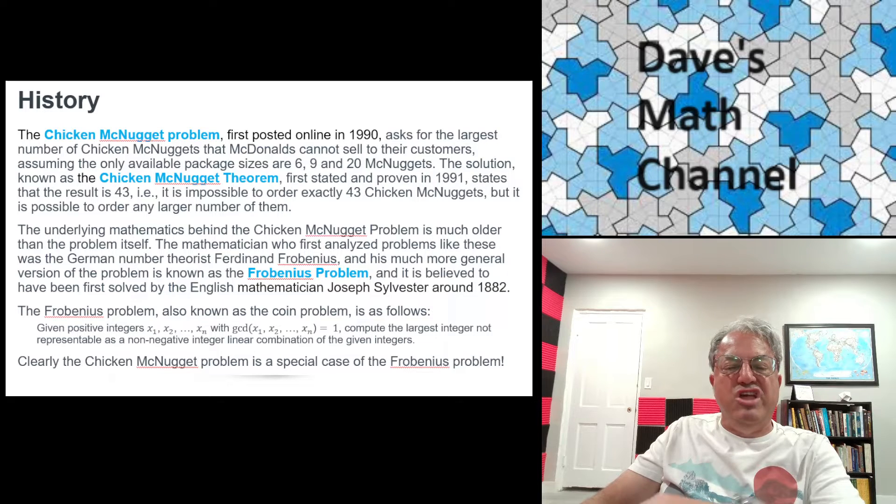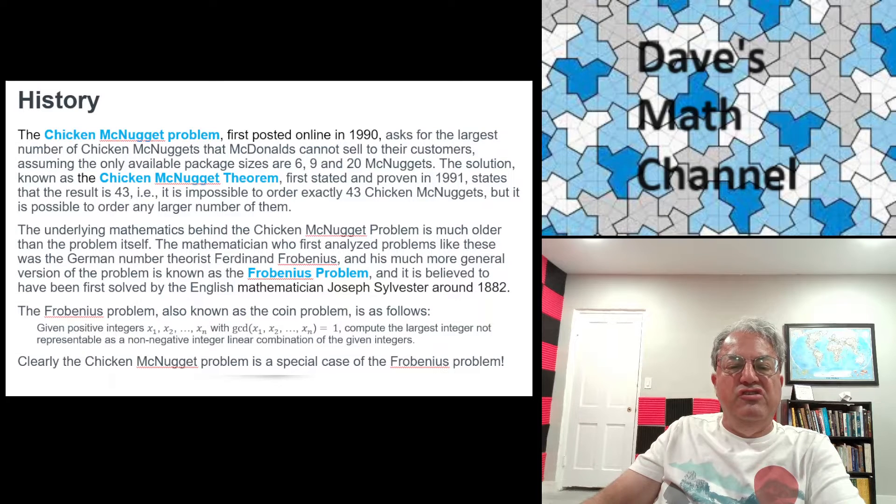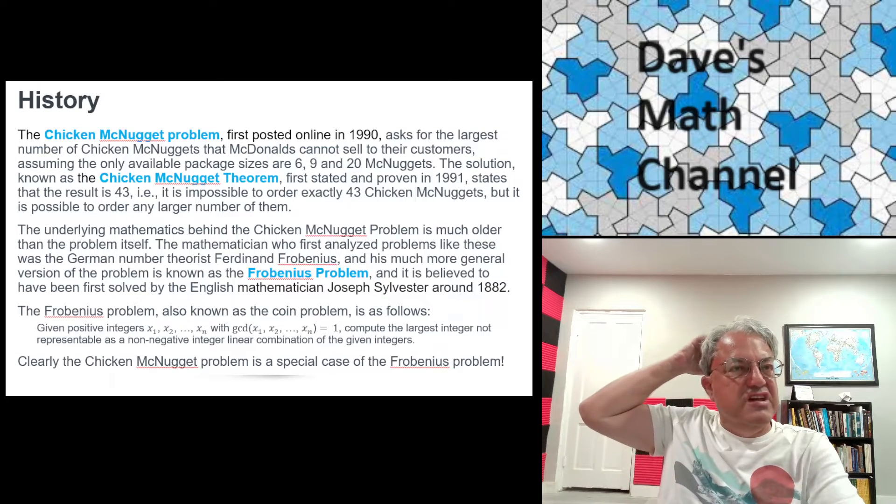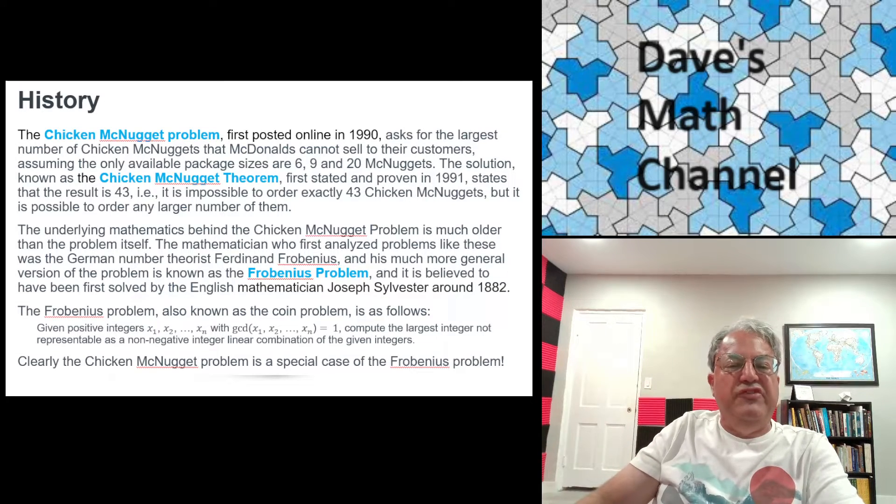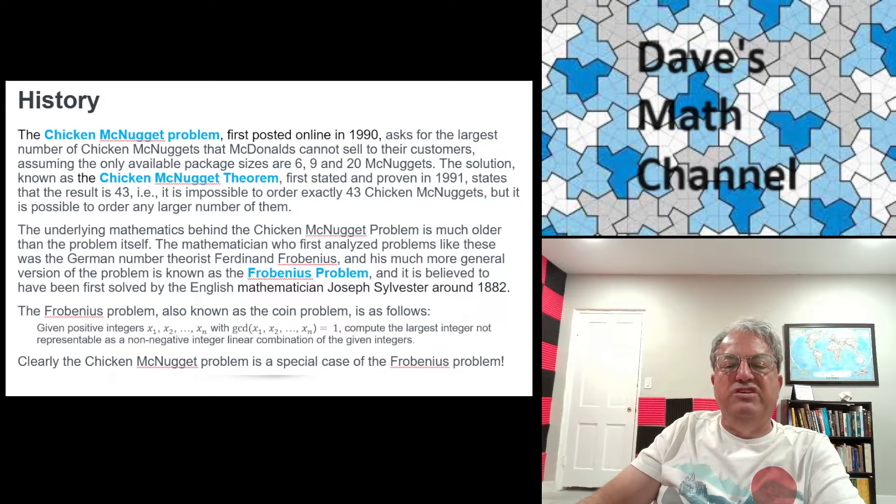And of course, we could use his solution to solve the Chicken McNugget problem if we wanted to. Unfortunately, I guess what happened was, since everybody knows McDonald's, McDonald's Chicken McNuggets kind of made the Frobenius problem famous. Most people didn't know about the Frobenius problem because most people don't know that much advanced math, obviously. It was just a number theory problem.